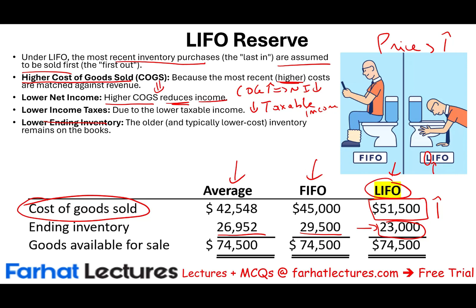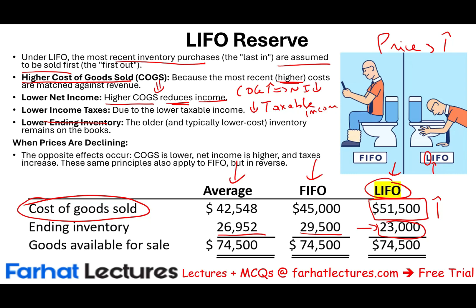Everything shown assumes prices are rising, which is the norm. When prices are declining, the opposite occurs: cost of goods sold is lowest, net income is highest, and your tax bill would increase. The same principle applies to FIFO but in reverse. Make sure you are comfortable with the impact of FIFO and LIFO on profit and income.